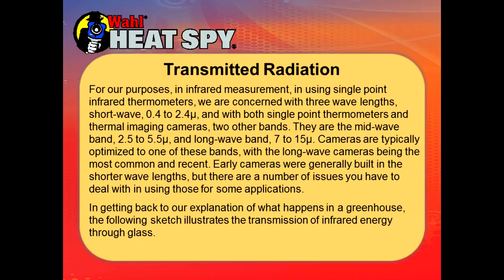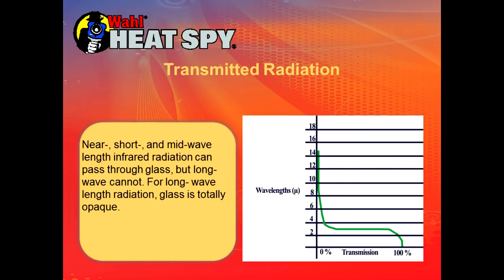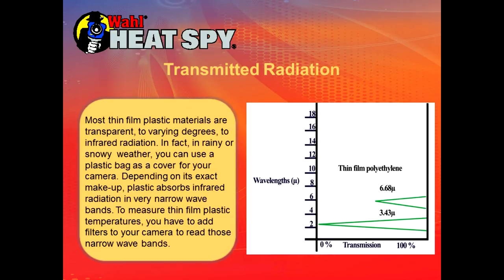Getting back to the greenhouse explanation: near, short, and mid-wavelength infrared energy will pass through glass to a greater or lesser extent, but long-wavelength will not — for long-wavelength radiation, glass is totally opaque, like looking at a wall. So when Hollywood tells you in a movie that they can see through walls with sniper scopes, that's all made up — it will not happen. Most thin film plastics are transparent to varying degrees to infrared radiation; in rainy or snowy weather, you can use a plastic bag as a cover for your camera to protect it from water. To measure thin film plastic temperatures you need filters to only see those narrow wavelengths.